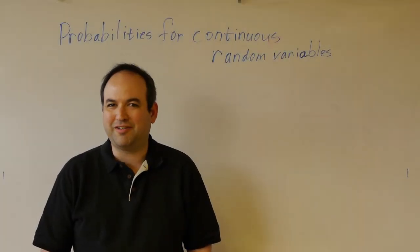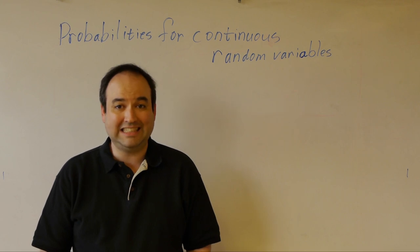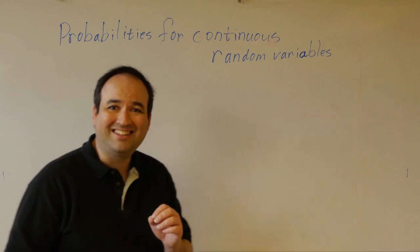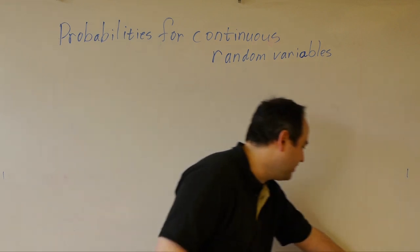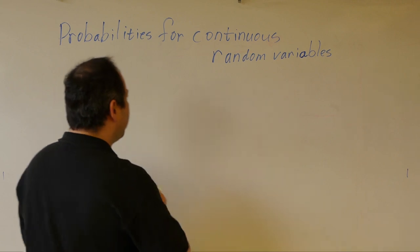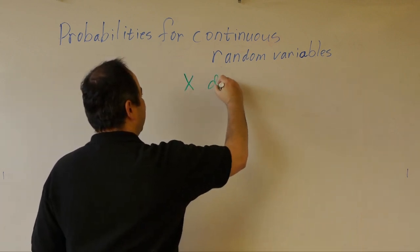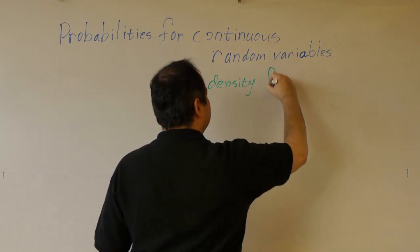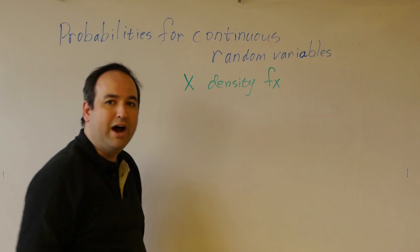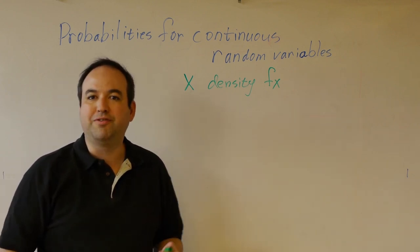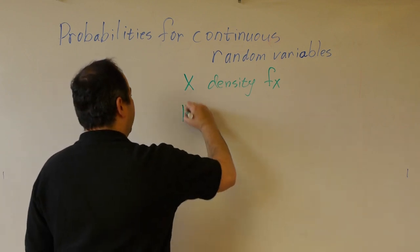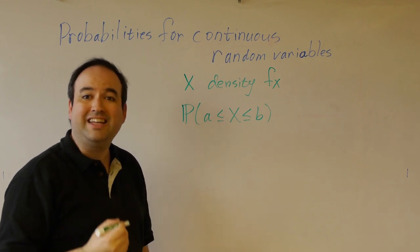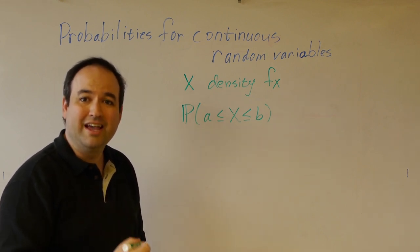Today we're going to talk about how to find probabilities for continuous random variables. If a random variable is continuous, it has a density with respect to Lebesgue measure. So if we have a continuous random variable x, it has a density that we'll call f sub x. Once you have the density, if you want to know the probability that the random variable falls between two values a and b, you just integrate the density from a to b.